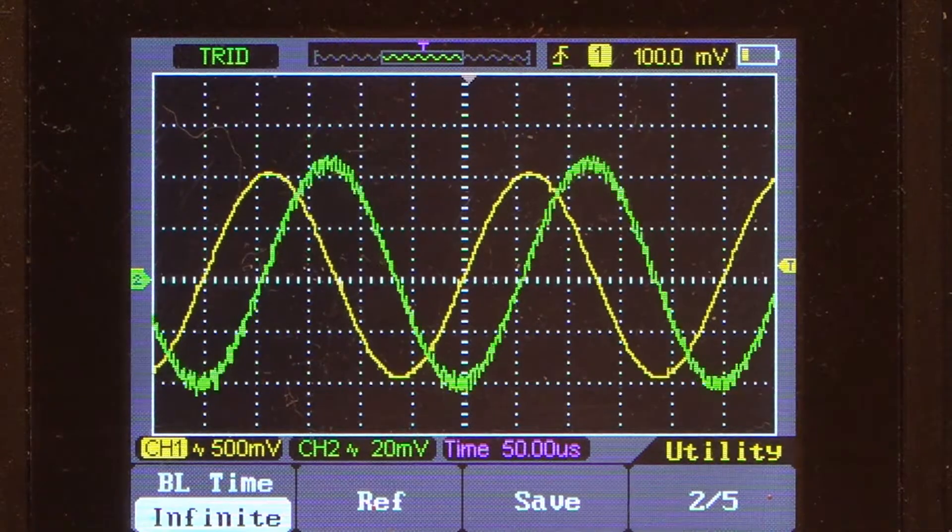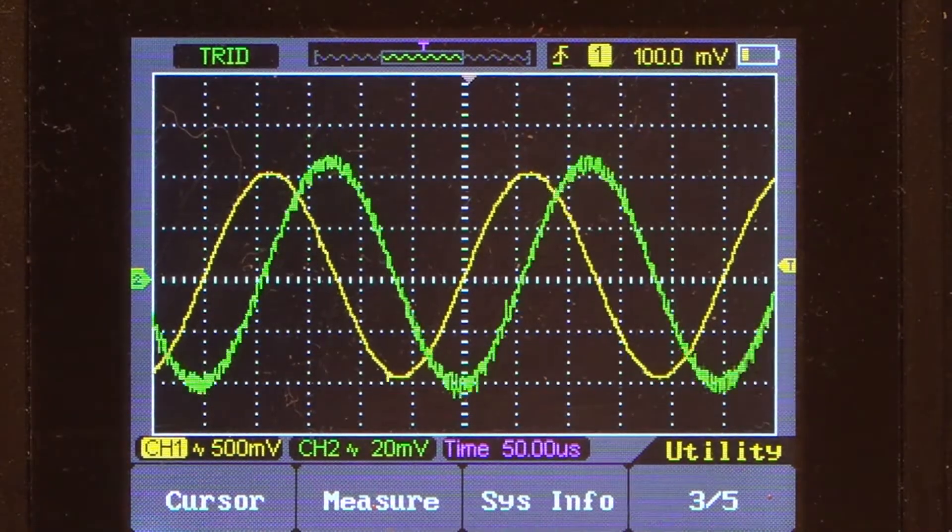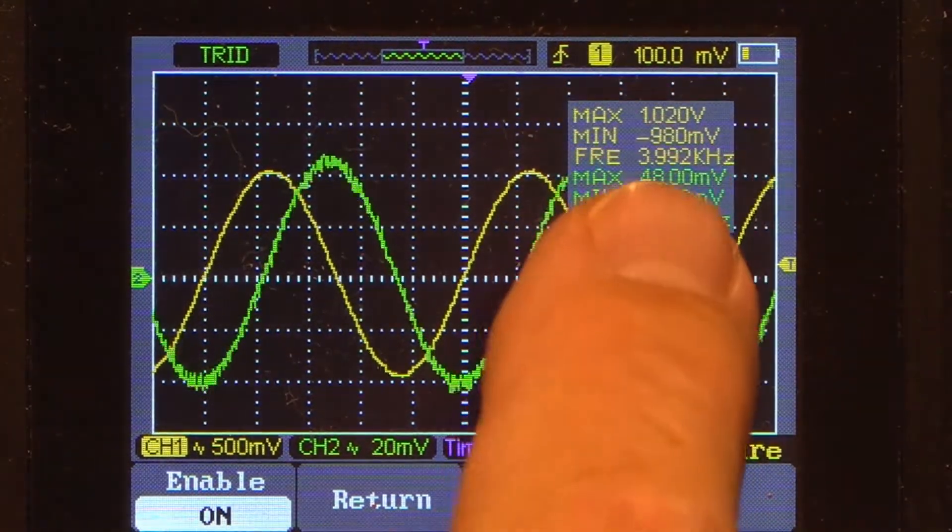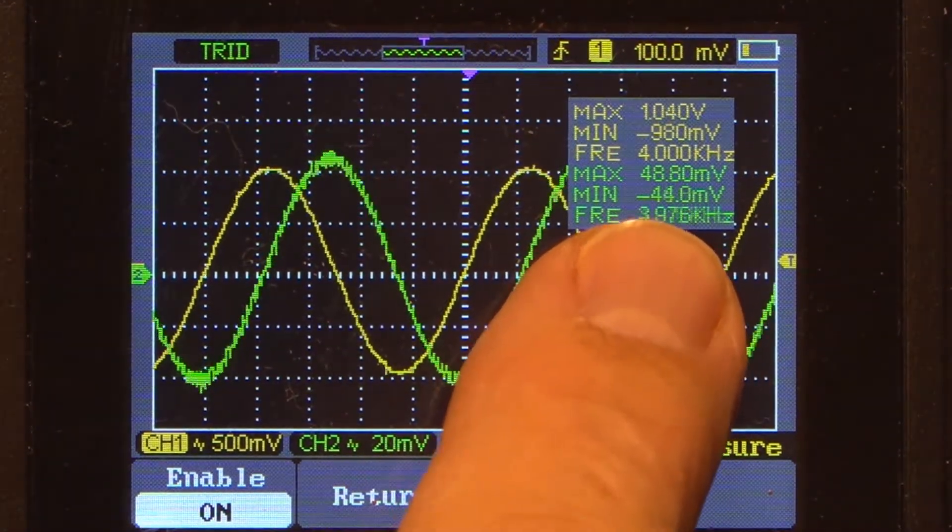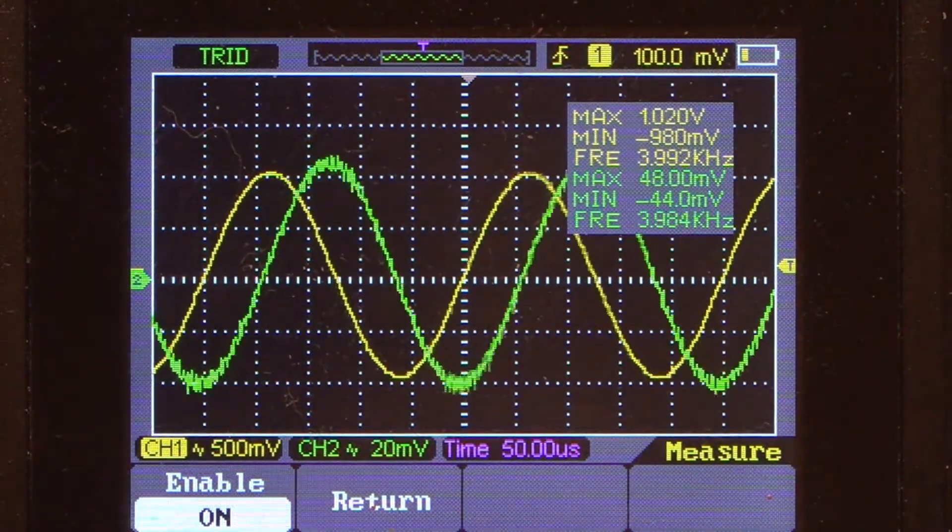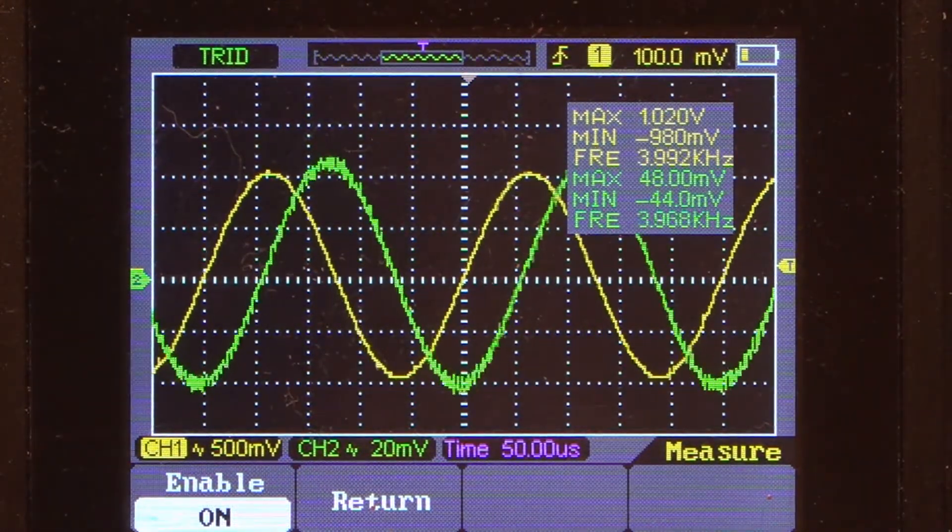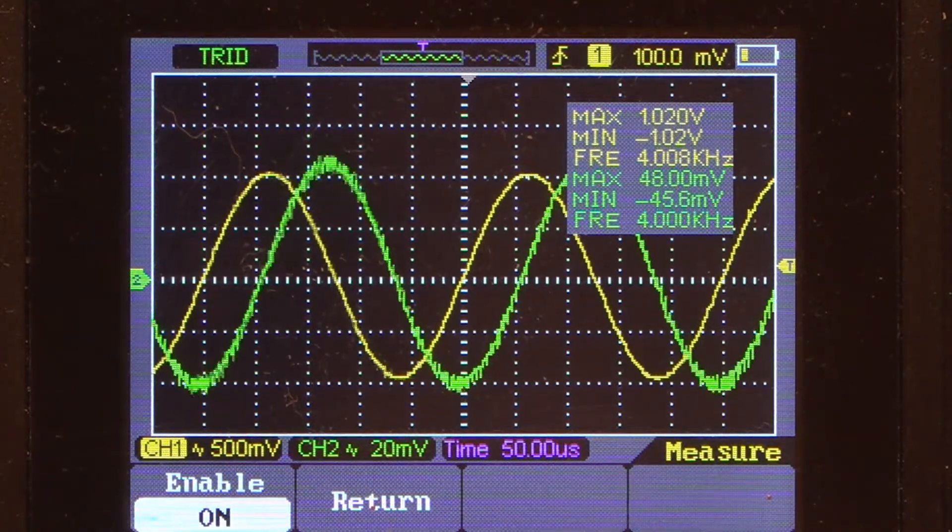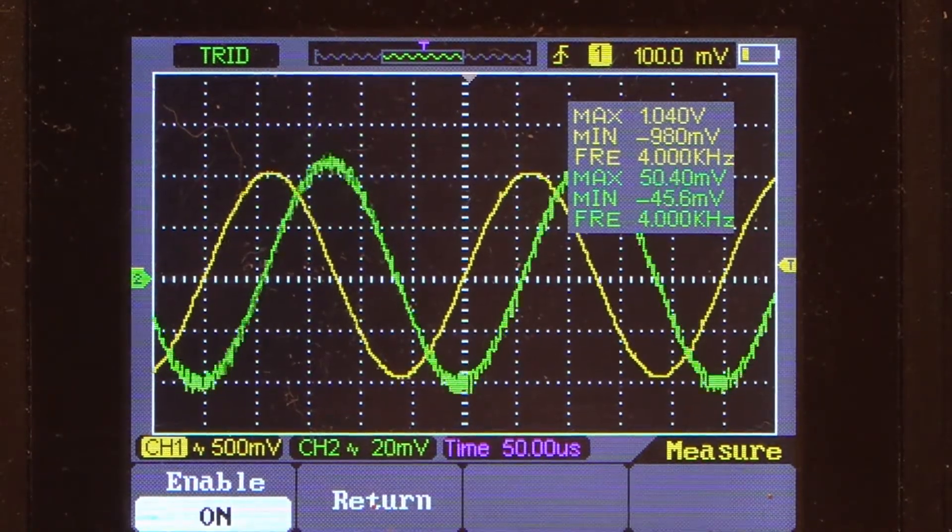So we go to page 3, click on measurement, enable it and up in the top right hand corner we got a window in our display which shows us the maximum and the minimum voltages for both channels along with the frequency. I'm pumping out 4 kilohertz so 4 kilohertz is good and the voltages are what I expected from my multisim.